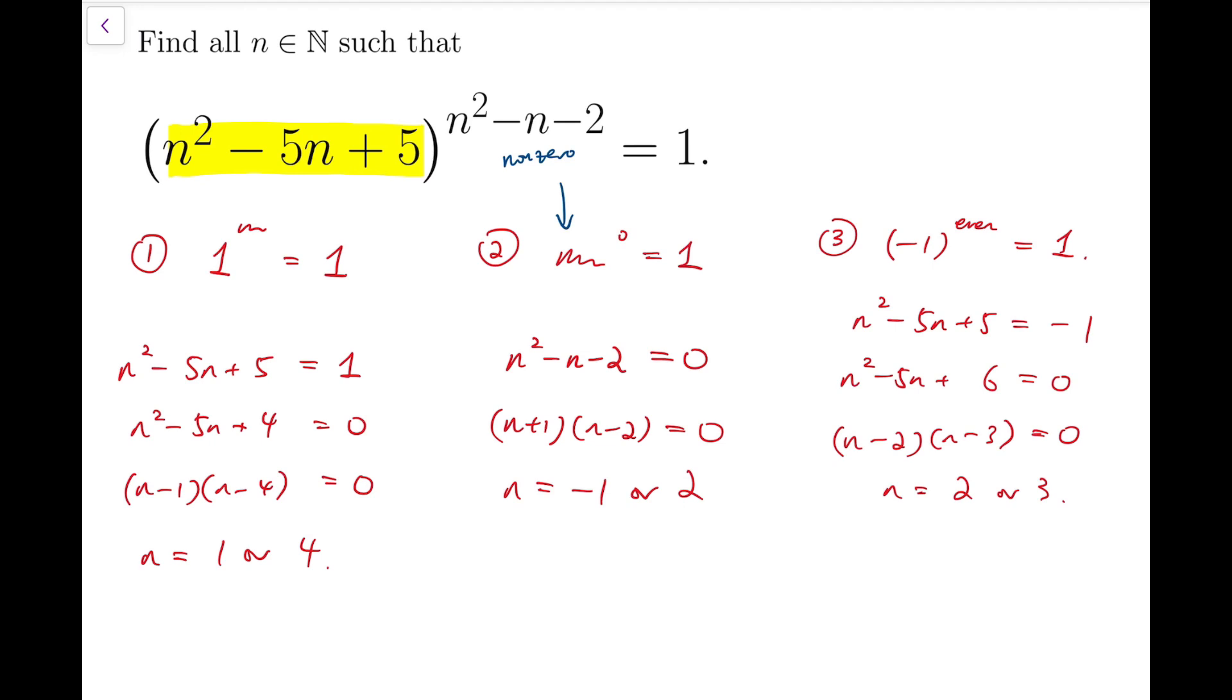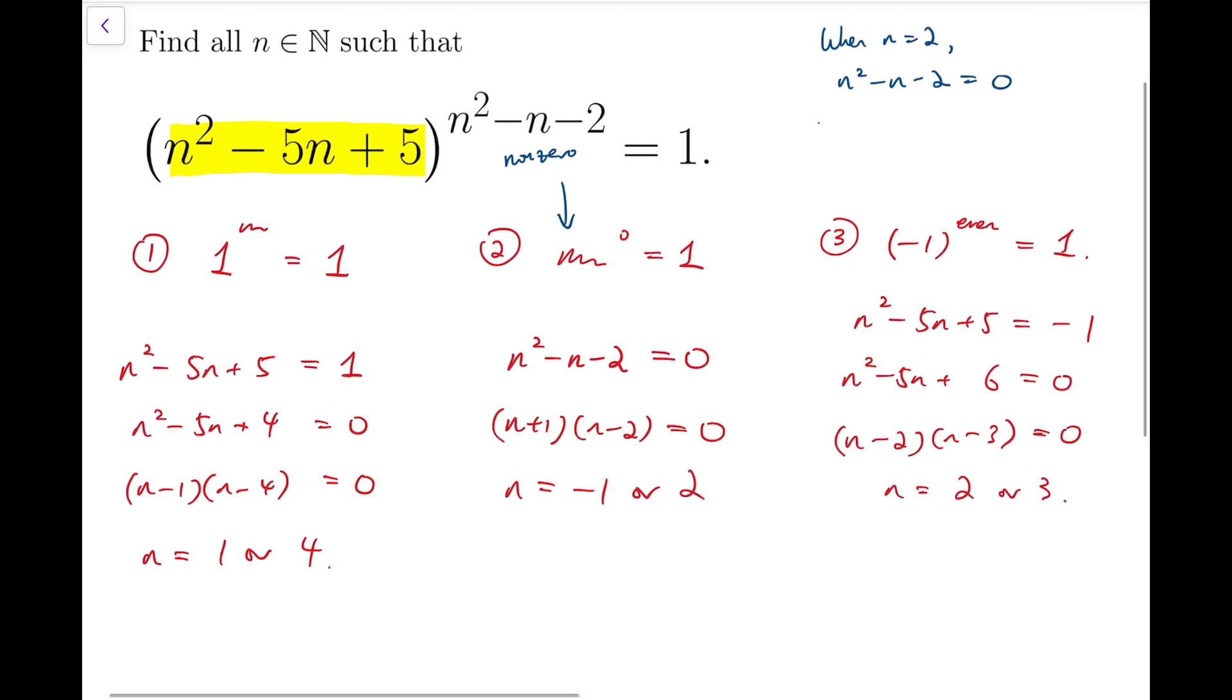Now, this case is a bit complicated because we have to check whether n squared minus n minus 2 is also even. Now when n is 2, n squared minus n minus 2 is actually 0. And when n equals 3, n squared minus n minus 2 is actually equal to 4. So this time we're lucky, both solutions would work.